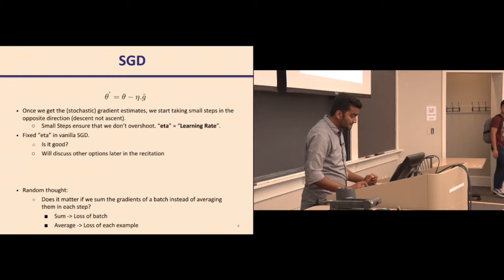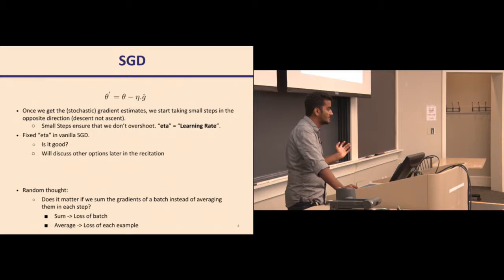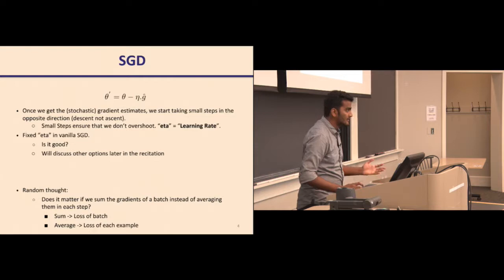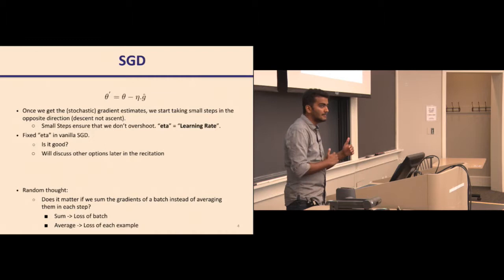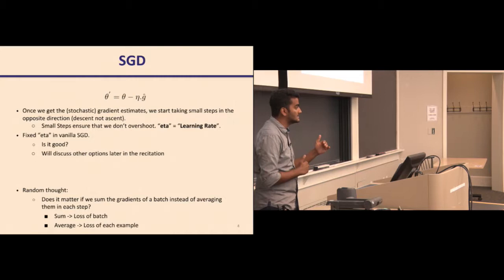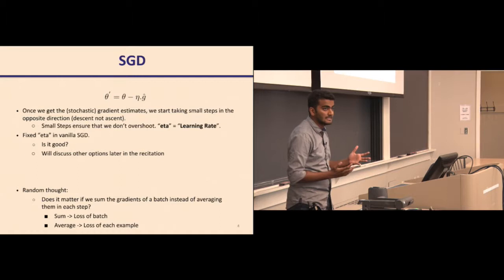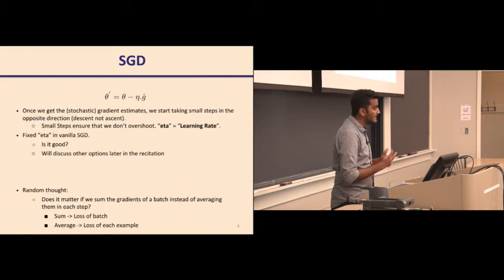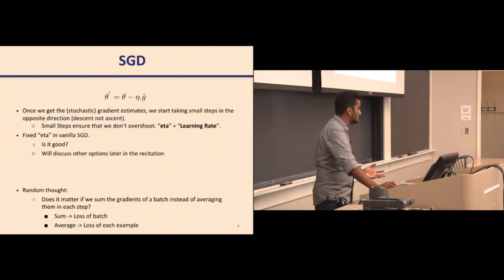The update rule is similar to what we have seen: the weights are updated by gradients multiplied by a learning rate eta. The learning rate scales your gradients up or down. This is important because instead of finding true gradients, we are finding stochastic estimates. In vanilla stochastic gradient descent, this learning rate eta is a fixed scalar.